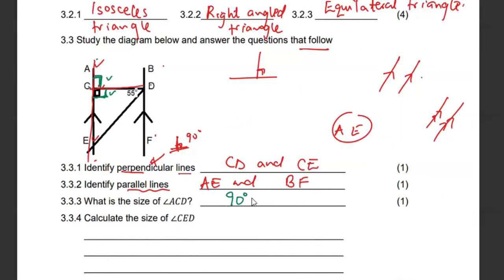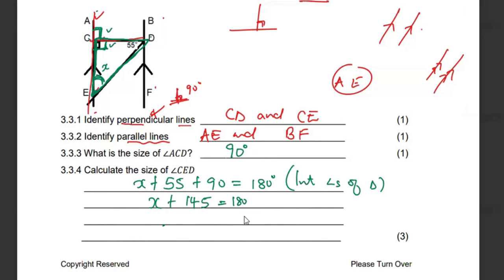And then calculate the size of CED. They want us to find this angle within this particular triangle. One thing we need to know about angles in a triangle is that they add up to 180 degrees. So if I call this my X, then X plus 55 plus the 90 must get 180 degrees because those are interior angles of a triangle. We know that 55 plus 90 is going to be 145 equals 180. And then we need to subtract, meaning that your X is going to be 180 minus 145, which gives us just 35 degrees.